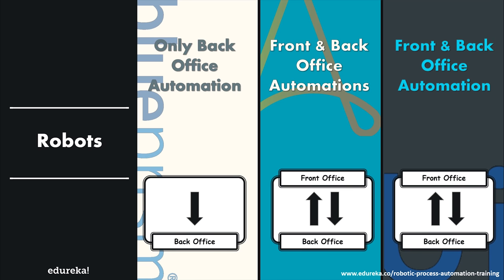Next, we compare these tools based on robots. Robots are responsible for catering front and back office automation, or both. Front office covers tasks directly affecting customers — such as sales, customer service, marketing, and websites. Back office covers supportive functions like IT, human resources, and inventory management. With Blue Prism you can only cater to back office automation, whereas UI Path and Automation Anywhere cater to both front and back office automation.